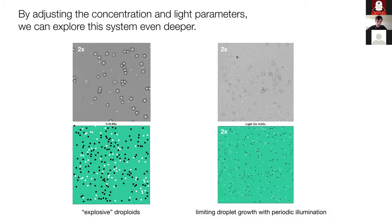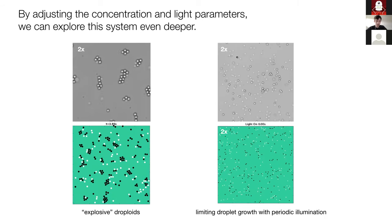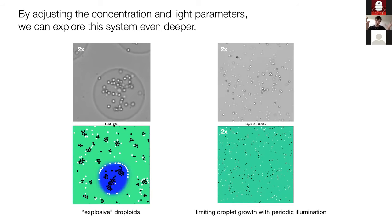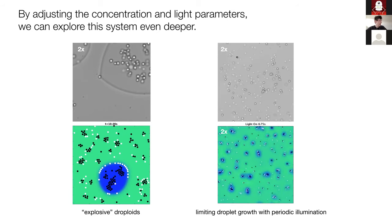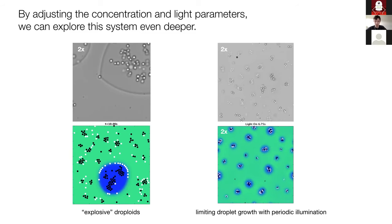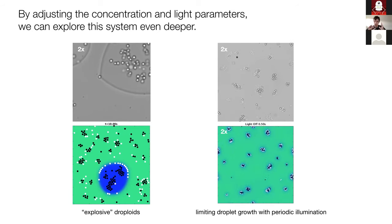Finally, two other phenomena we observed. First, 'explosive droplets': a very delayed droplet formation where a large energy barrier must be overcome, and then suddenly — in both experiments and simulations — the droplet explodes to a very large size in a very short time. Second, using periodic illumination — switching light on and off — we can limit droplet growth. In simulations, when light is off, the droplets are still visible and maintain the same size over time, demonstrating controlled droplet size regulation.